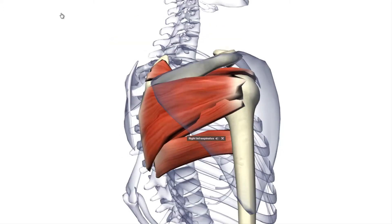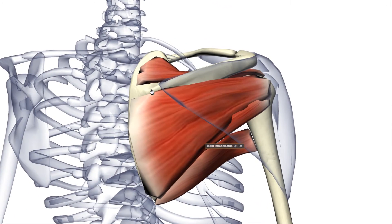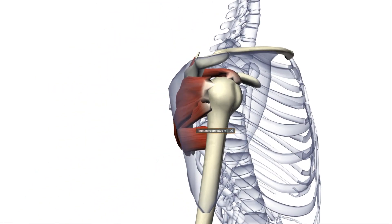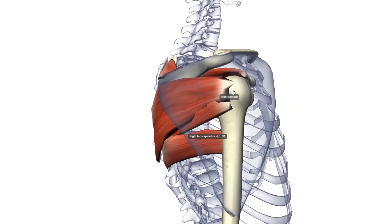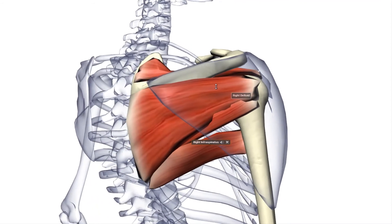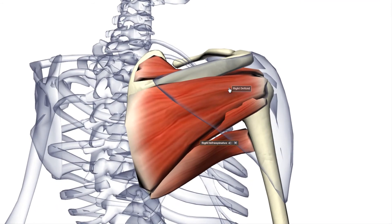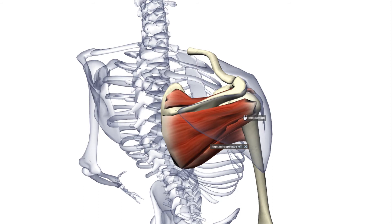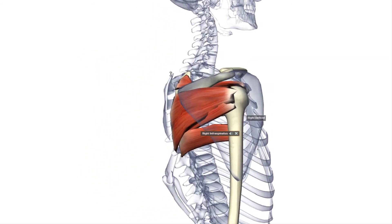We also have the infraspinatus, the muscle that is below the spine. The origin of the infraspinatus is the infraspinous fossa of the scapula. The insertion is the middle facet of the greater tubercle of the humerus. It is innervated by the suprascapular nerve, and its function is to laterally rotate and adduct the arm. It also serves to stabilize the humerus.